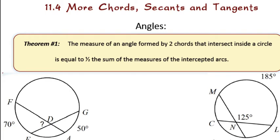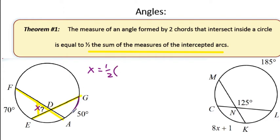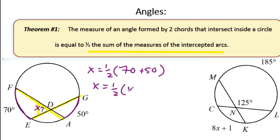We're going to start by learning a theorem about two chords on the inside of a circle. The theorem says that the measure of an angle formed by two chords that intersect on the inside of the circle — so basically you draw an X on the inside of a circle — is equal to half the sum of the measures of the intercepted arcs. So I'm going to call this angle X. X would equal one half the measures of this arc and this arc, the two arcs that are intercepted. So in this case it's 70 plus 50, so X equals half of 120, which is 60 degrees.